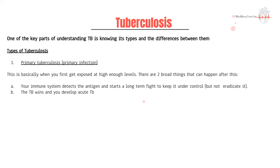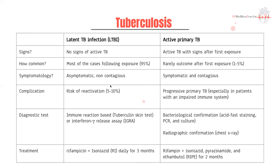Either your immune system detects it and starts a response — mostly T cell and CD4/CD8 cell mediated — and starts an ongoing battle to keep it under control but never eradicates it. It's always in your body but not bad enough to cause symptoms. That's called latent TB. The second circumstance is that the TB is so overwhelming that you develop acute symptomatic TB — infecting your lungs, causing coughs, weight loss, and all the TB symptoms you know. That is active TB. With primary TB, you can either have latent primary TB or active primary TB.